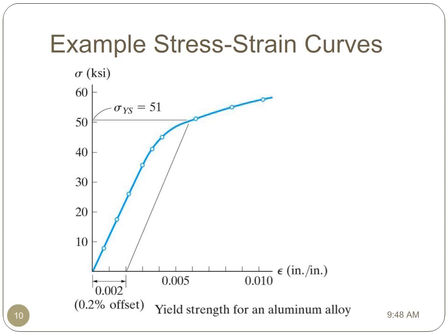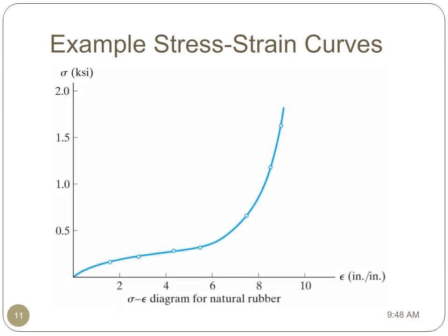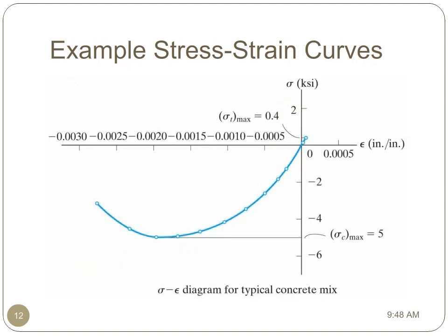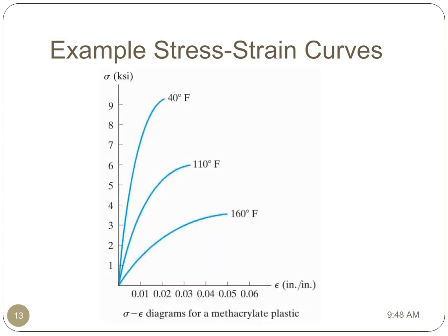Not all materials have clearly defined yield stress. This is especially true for brittle materials. This figure shows the stress-strain curve for aluminum alloy, where the 0.2% offset method has been used to determine a theoretical yielding stress for use in engineering design. Some materials don't exhibit the typical regions that we associate with other engineering materials. For instance, this diagram of natural rubber has no region of a linear relationship between stress and strain, and its stiffness increases dramatically as it approaches its failure stress. Additionally, many materials have different properties in tension as opposed to compression. For instance, for this diagram of a typical concrete mix, the strength of material in tension is very low, while the strength in compression is very high. Material property is also a function of temperature. For instance, in this diagram for a typical plastic, we can see that at higher temperatures, the material is much stiffer than it is at lower temperatures.